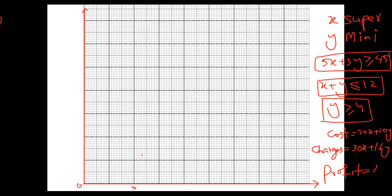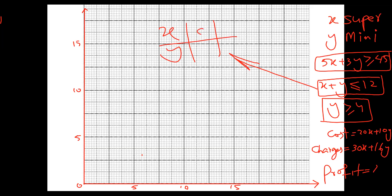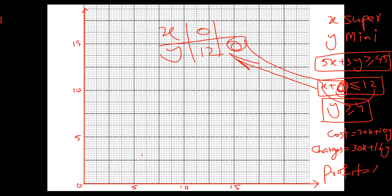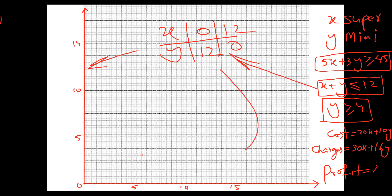For the inequality X plus Y equals 12, I use the standard method. Put X equals zero: Y equals 12. Put Y equals zero: X equals 12. So the two points are (0, 12) and (12, 0). I can see 12 on both axes and I'll mark those points.